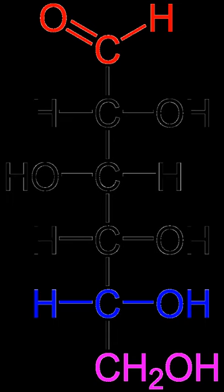Two joined monosaccharides are called a disaccharide and these are the simplest polysaccharides. Examples include sucrose and lactose. They are composed of two monosaccharide units bound together by a covalent bond known as a glycosidic linkage, formed via a dehydration reaction, resulting in the loss of a hydrogen atom from one monosaccharide and a hydroxyl group from the other. The formula of unmodified disaccharides is C12H22O11. Although there are numerous kinds of disaccharides, a handful are particularly notable.